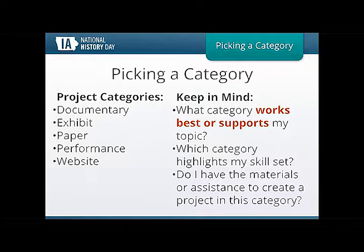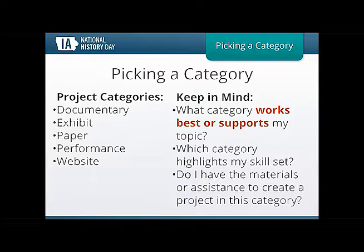Think about what category highlights your skill set. Do you like performing in front of large crowds? Do you feel comfortable with technology, building websites, or working behind the camera making a documentary? Also consider: do I have the materials or assistance to create a project in this category? What resources do you have at home or at school? Alex and Andrew, do you have any tips on what you asked yourself each year when picking a category?